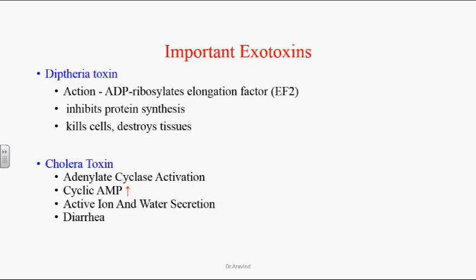Exotoxins are protein in nature and are secreted by bacteria. They can have two varieties of activity: enzymatic activity, by which they can restrict the cell membrane or cell wall, and the A and B toxin variety. In the A and B toxin variety, the B unit is for binding — adhesion of the toxin to host cells — and the A unit is the lethal one that performs the tissue injury. An example is the diphtheria toxin, secreted by Corynebacterium diphtheriae. It causes ADP-ribosylation of elongation factor 2, which inhibits protein synthesis, ultimately leading to cell death and pseudomembrane formation.